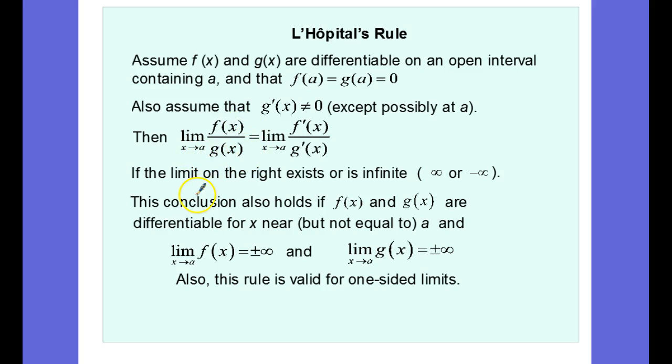It follows then that the limit as x approaches a of f(x) over g(x) is equal to the limit as x approaches a of f'(x) over g'(x). Once again, we're not applying the quotient rule. We're just simply differentiating the top and differentiating the bottom.